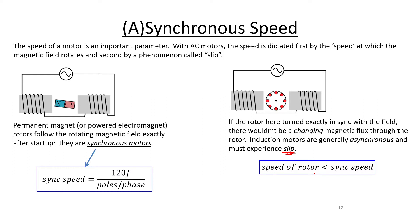You need slip. In other words, the speed of the rotor, that squirrel cage, must be less than the synchronous speed—the speed of the rotation of the magnetic field around the stator. In a synchronous motor, the speed of the rotor and the synchronous speed are equal, but in an induction motor, the speed of the rotor is always less than the synchronous speed.